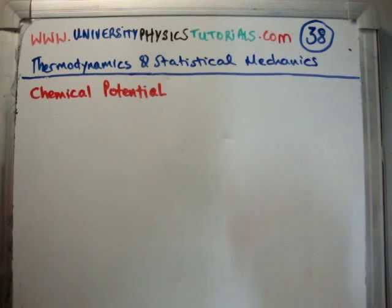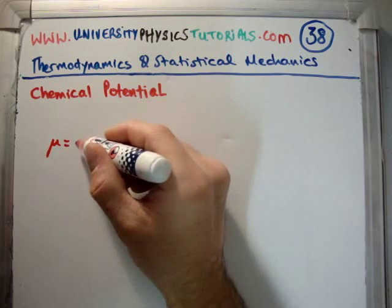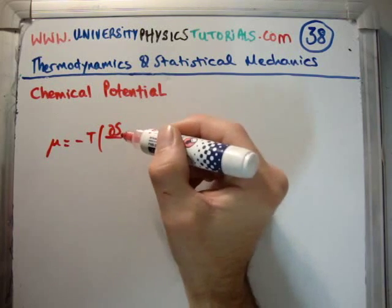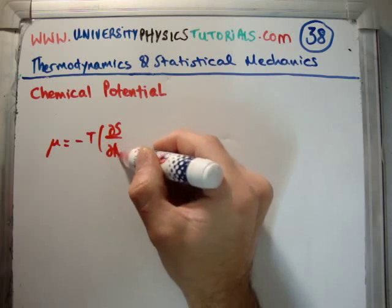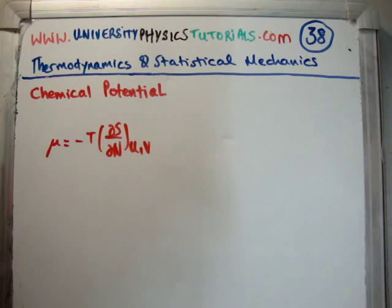In video number 36, we derived the following equation: that the chemical potential is minus the temperature, then the rate of change of entropy with respect to the number of particles, and we're holding both the internal energy and the volume fixed.